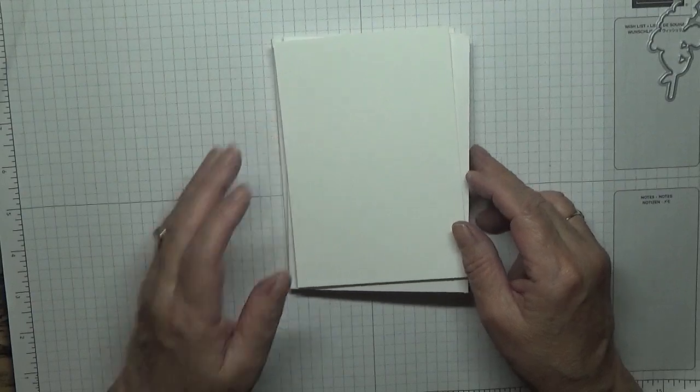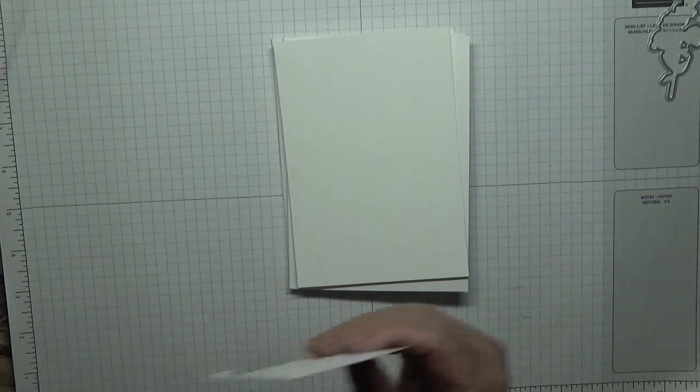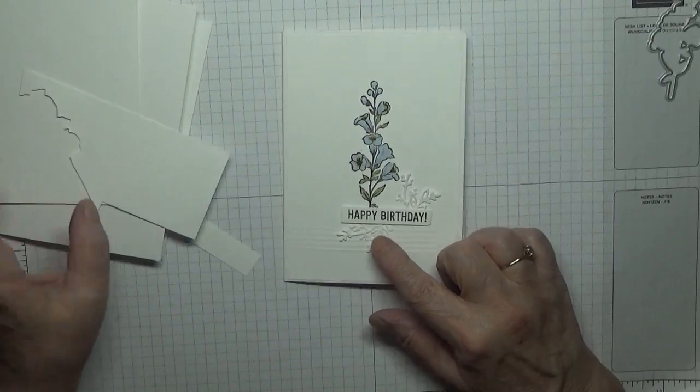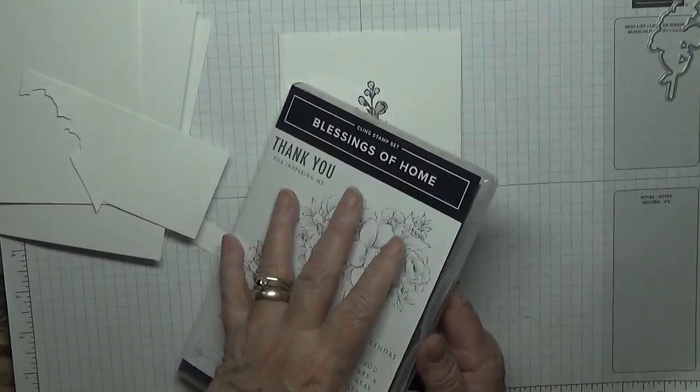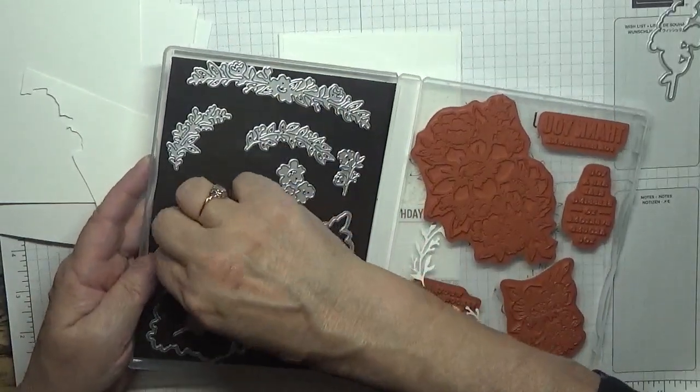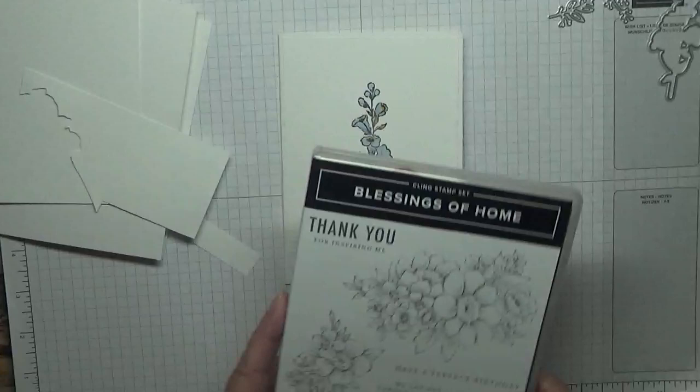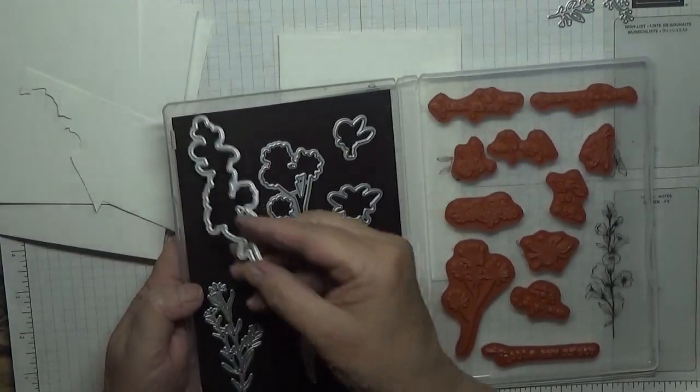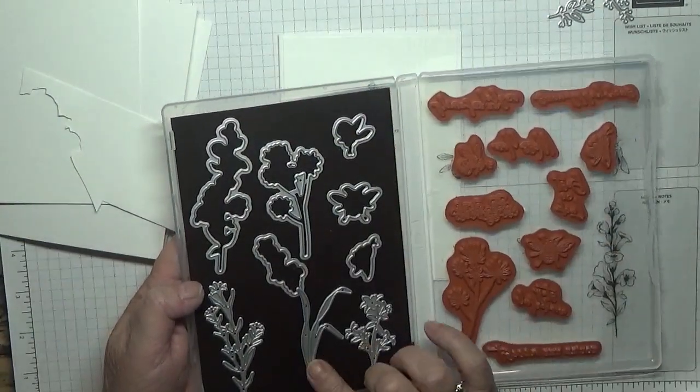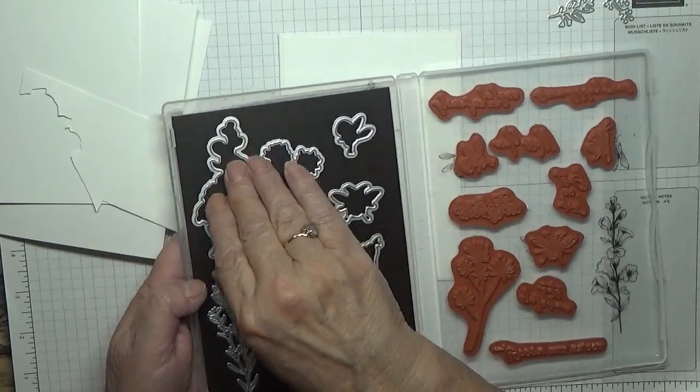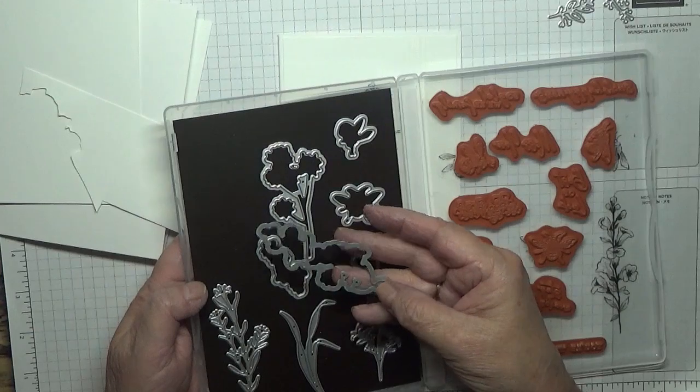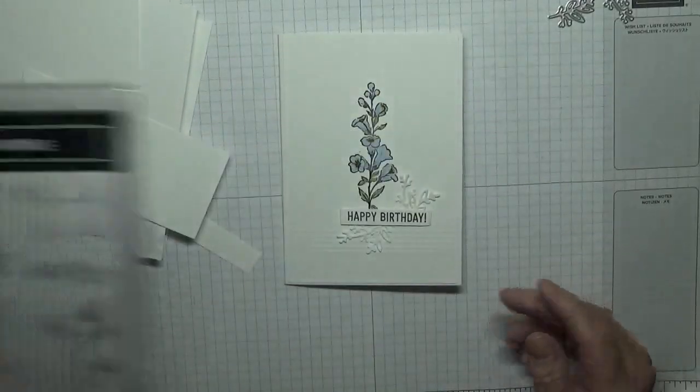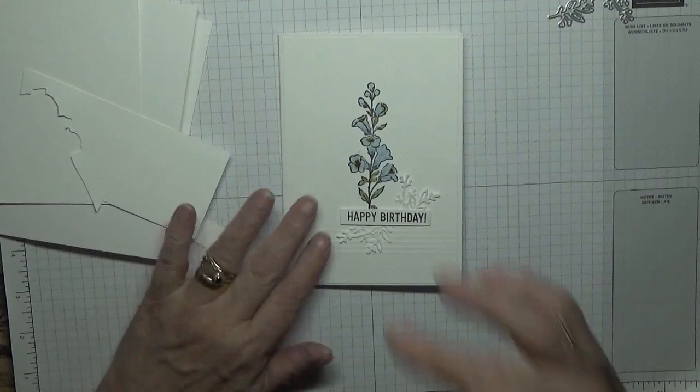I also have a little scrap for the sentiment and some little leaves cut out from Blessing from Home using a couple of these dies. These are Honeybee dies which you can buy as a bundle. By the way, this was a Christmas present, that's why I got the bundle.